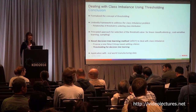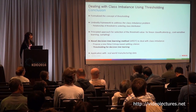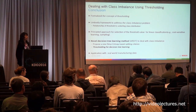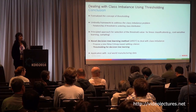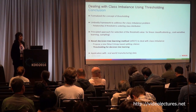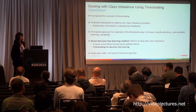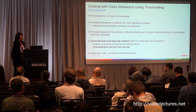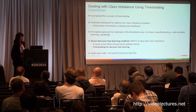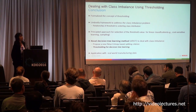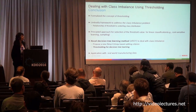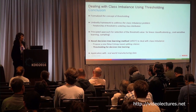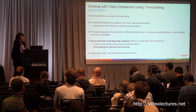Final question: how does this compare to classical approaches for dealing with class imbalance, like downsampling or synthetic minority oversampling (SMOTE)? The speaker answered: in our paper we do speak about undersampling and oversampling, and we can theoretically show that when you're undersampling or oversampling, you're basically changing the threshold. So it is related.